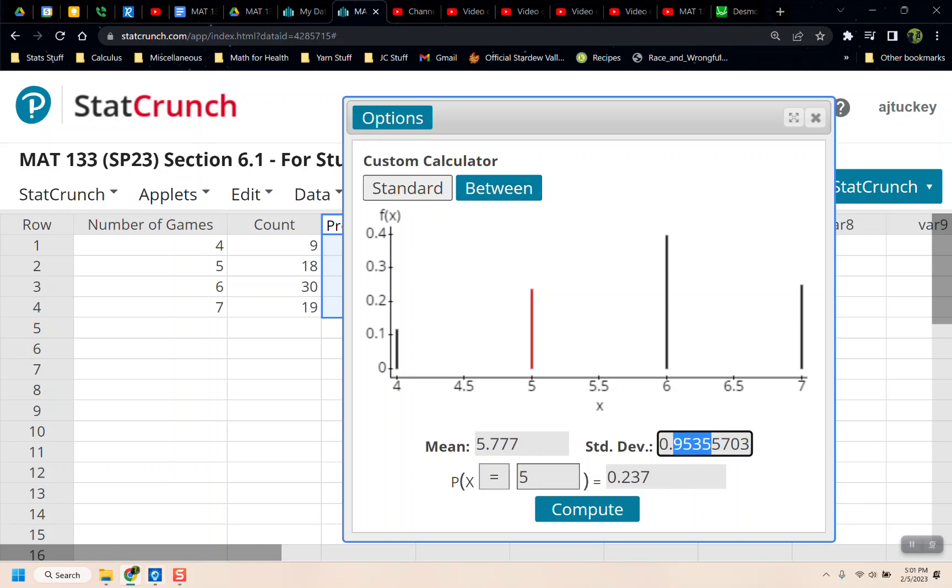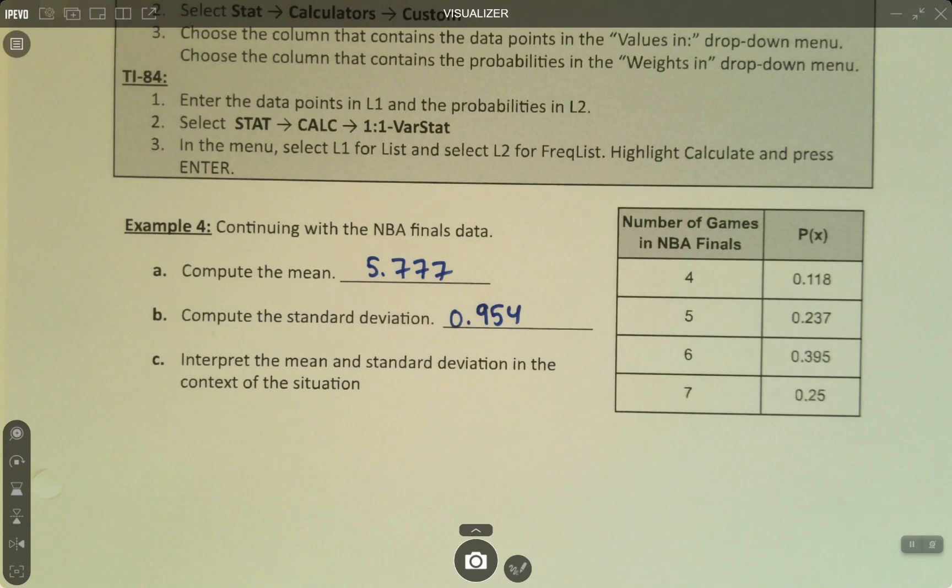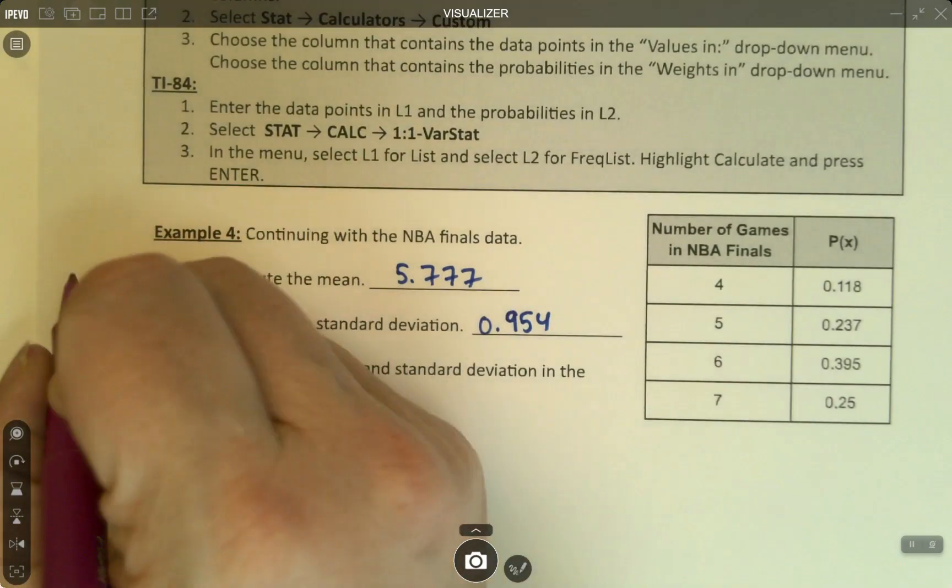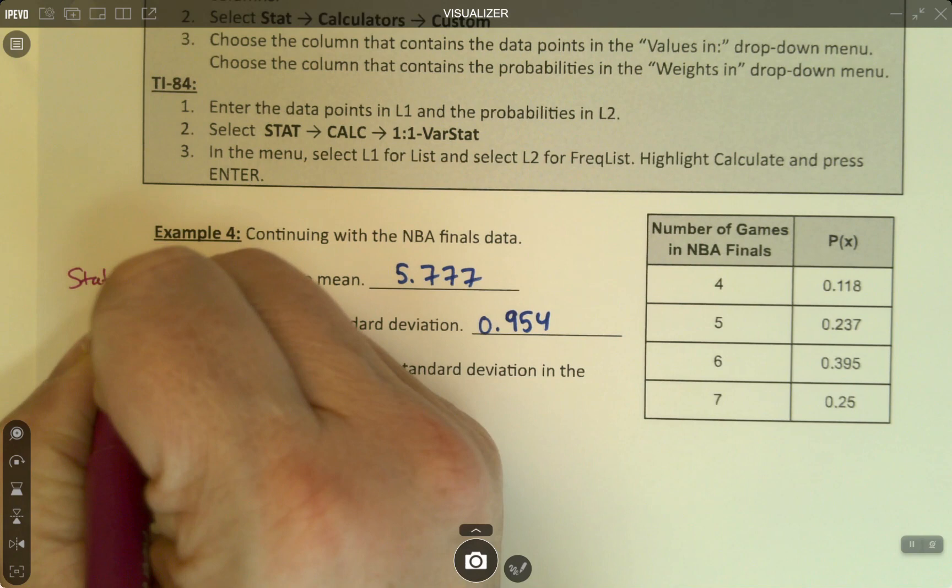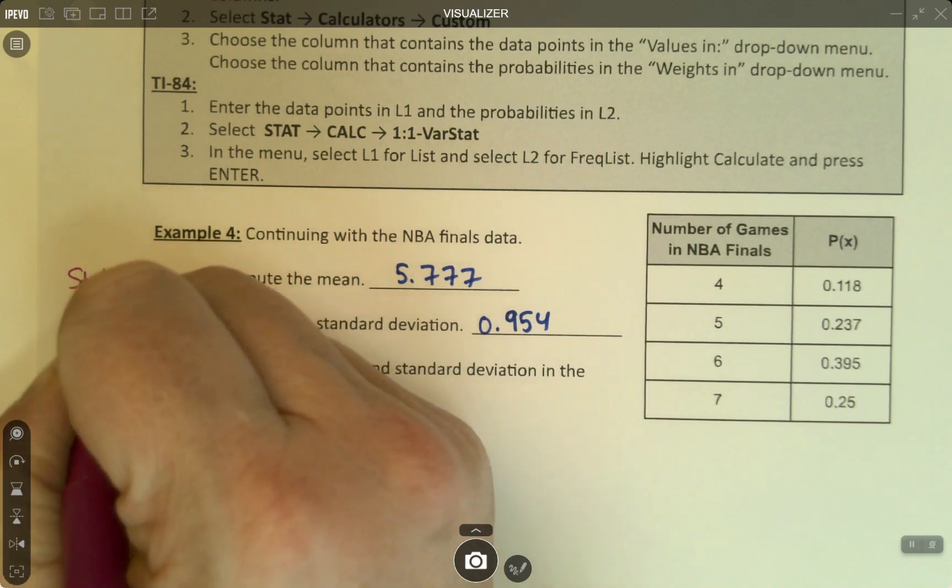All right. So let's go back and put those values in. So 5.777 and .954. I'm actually going to write them down before I switch back, otherwise I will forget. Let's write instructions for ourselves. So the StatCrunch path, it's up above, but it doesn't hurt to write it again in your own handwriting.